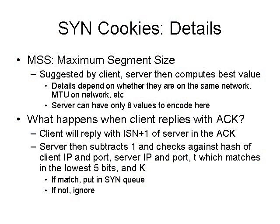When the client responds, they have to include this sequence number — they send back the ISN plus one. The maximum segment size was a three-bit number put in the middle of the ISN. The way TCP/IP works is that the MSS is proposed by the client, the server computes the best value as a compromise and sends it back. Normally you'd have a wider range, but because we only have three bits, there are only eight values the server will ever choose, based on the MTU of the network.